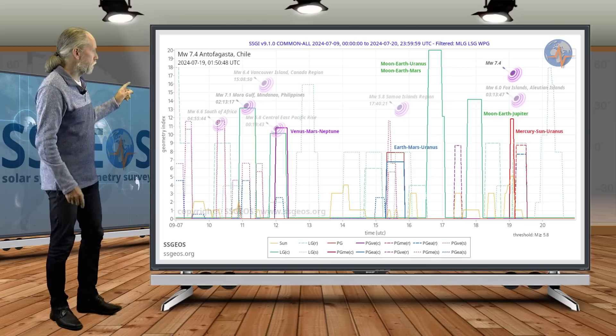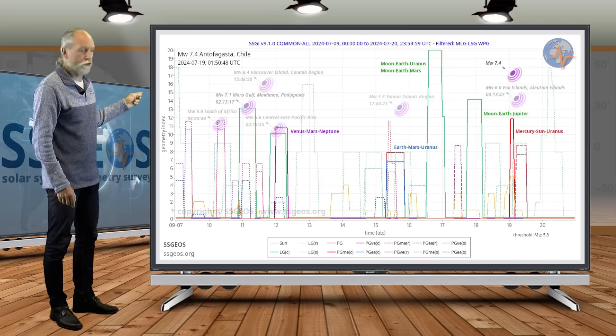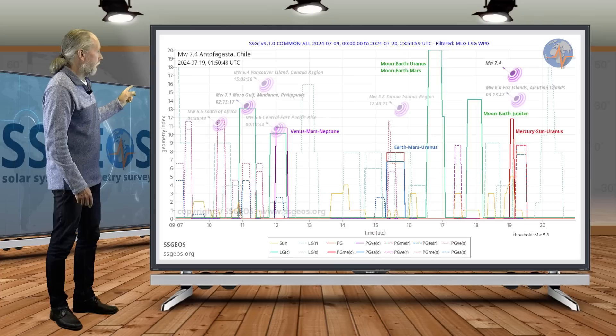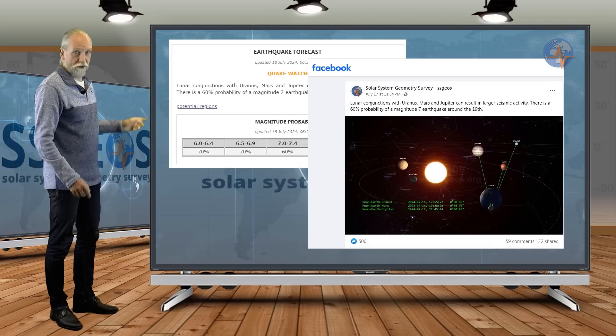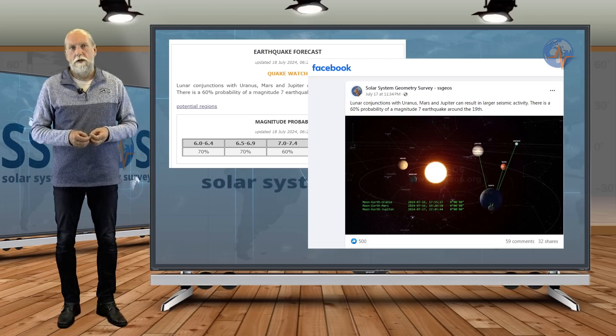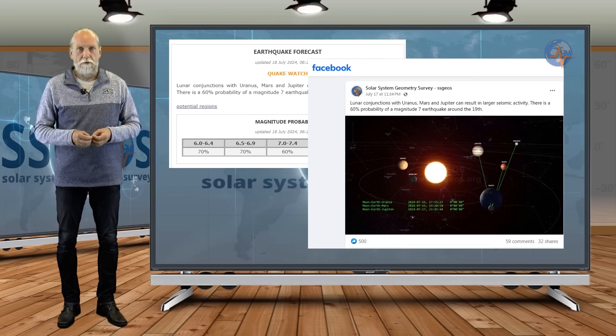But the planetary geometry starting on the 9th of July with Mercury, Venus and Uranus, that is key. And so check out the updates, additional updates on the website and in our social media, they are very important.